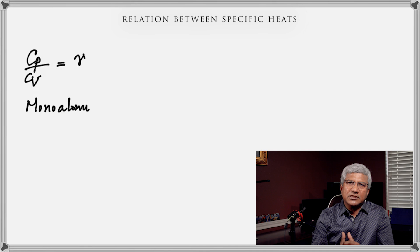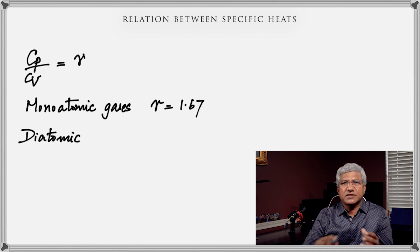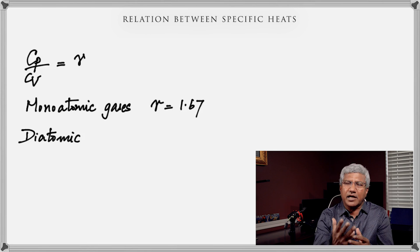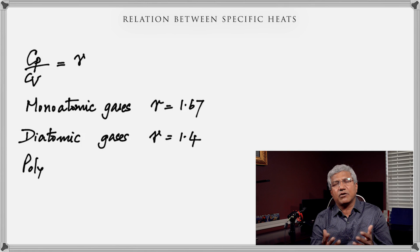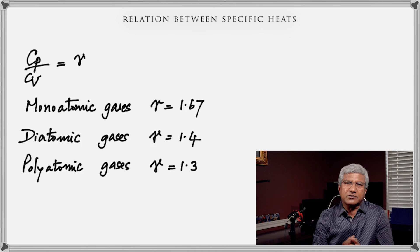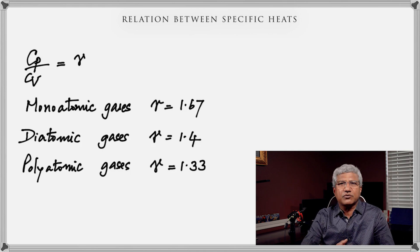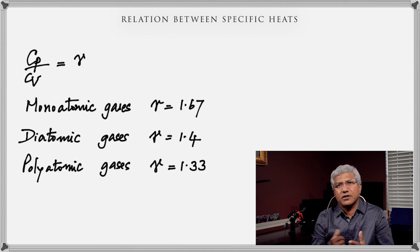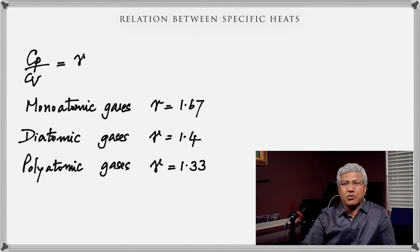The ratio of specific heats Cp/Cv is an important quantity denoted by gamma (γ). Since Cp is always greater than Cv, gamma is always greater than 1. For a monoatomic gas (helium, neon, argon), γ = 1.67. For diatomic gases (oxygen, nitrogen, hydrogen), γ = 1.4. For polyatomic gases (carbon dioxide, methane), γ = 1.33. For air, which is mostly nitrogen and oxygen and therefore diatomic, γ = 1.4.